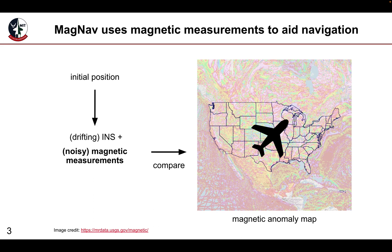The basic idea for airborne magnetic anomaly navigation, or MagNav, is to use magnetic measurements taken by the aircraft in order to assist with navigation. The simplified concept of operations is to start with an initial position using GPS, at which point it's assumed that the position information is no longer available due to GPS jamming. The aircraft still has an inertial navigation system that can estimate position, but the position error will drift over time. However, magnetic measurements can be taken and compared to a known magnetic anomaly map in order to correct for the drift and increase position accuracy.